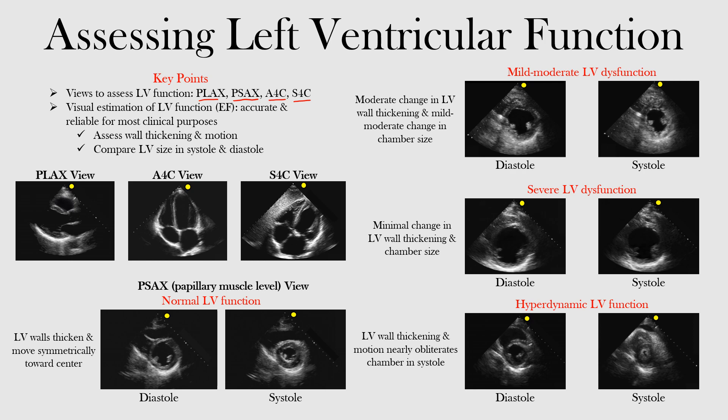Visual estimation of left ventricular function by ejection fraction is actually accurate and somewhat reliable for most clinical purposes, especially in the acute setting — for example, looking for an acute drop in LV function. We do this by assessing wall thickening and motion. In another lecture we'll look at left ventricular hypertrophy, but in this one I want you to compare the left ventricular size both in systole and diastole.